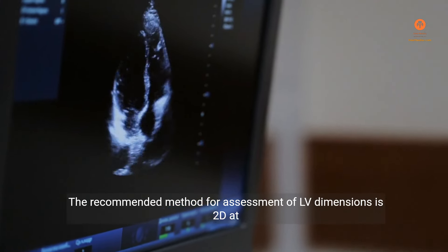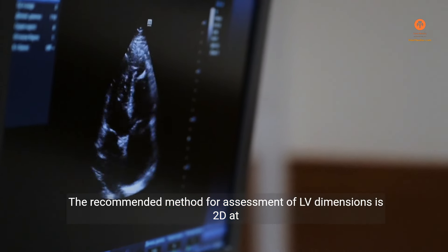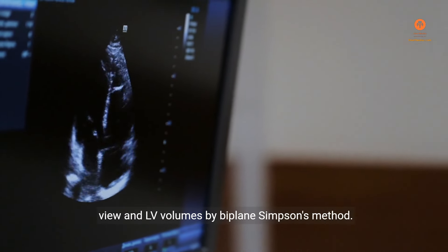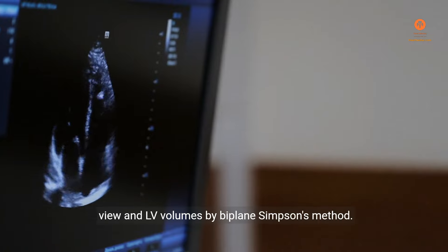The recommended method for assessment of LV dimensions is 2D at the level of tips of mitral leaflets in parasternal long-axis view and LV volumes by biplane Simpson's method.